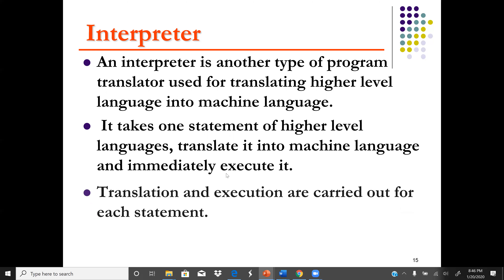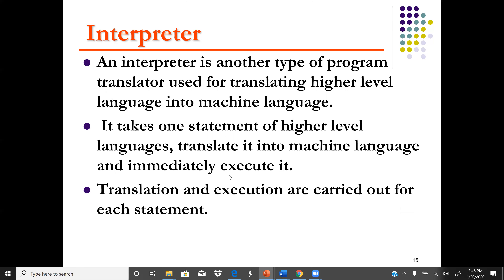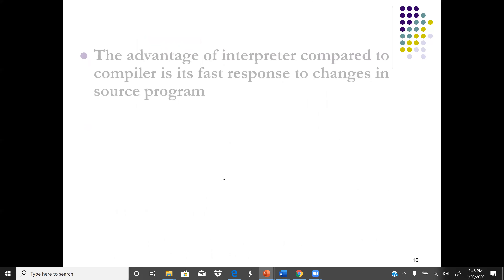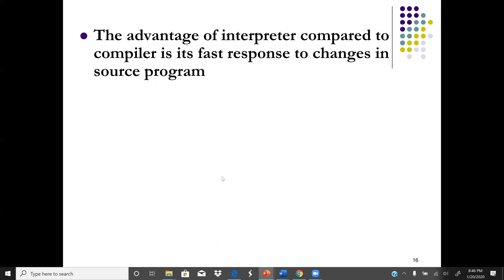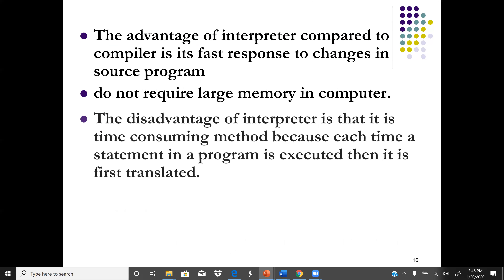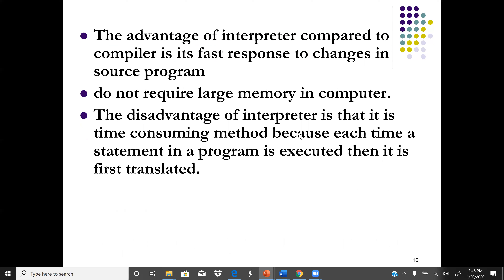A compiler compiles the whole program at once and then you can run it. The advantage of an interpreter compared to a compiler is that it responds very fast to changes in the source program and doesn't require much memory. The disadvantage of an interpreter is that it is time consuming — since it compiles one line at a time, it takes a lot more time compared to a compiler.